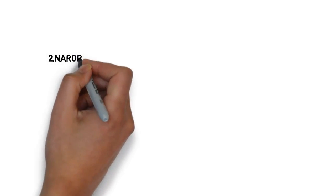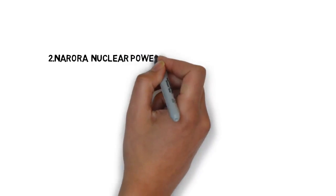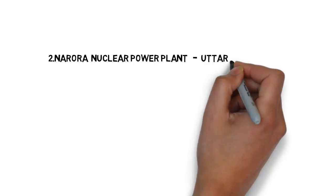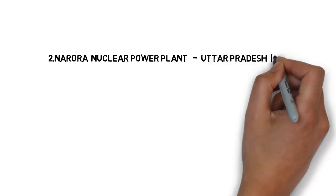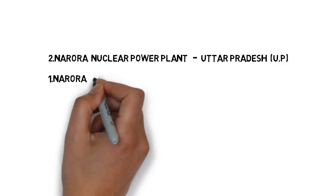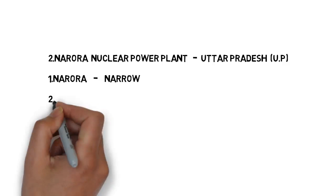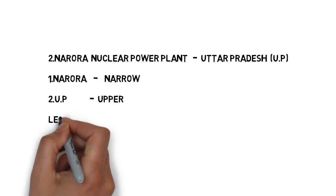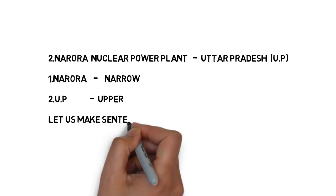Second one: Narora nuclear power plant. It is in Uttar Pradesh, short form UP. Let us assume Narora as 'narrow' — both look similar. Narora, narrow. And for UP, try to remember it as 'upper' — in the word 'upper' you can see the first two letters UP.